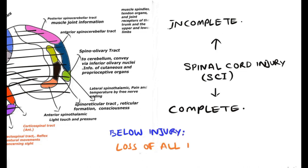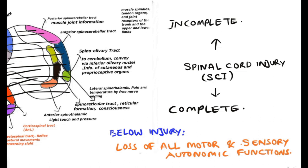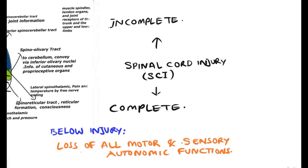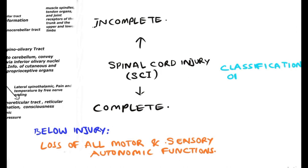Below the injury, the patient would lose all the motor, sensory, and some of the autonomic functions, as some fibers run through the spinal cord. This is the pathophysiology of the manifestations that follow the spinal cord injury below the injury level.